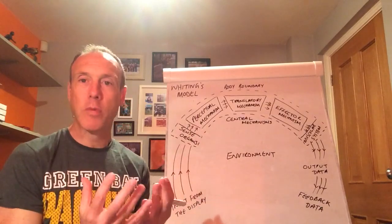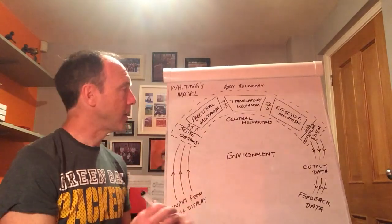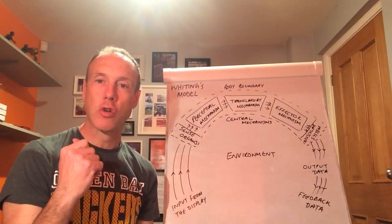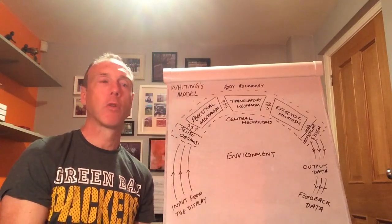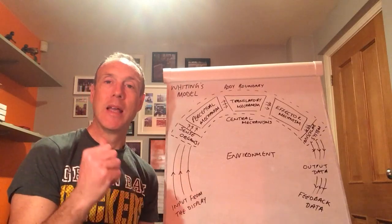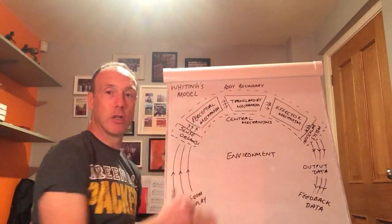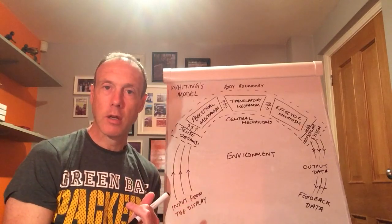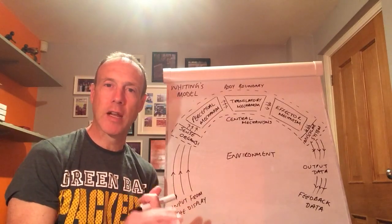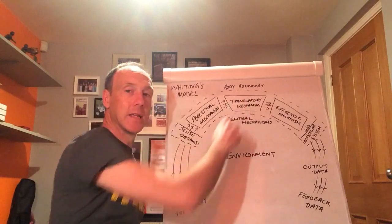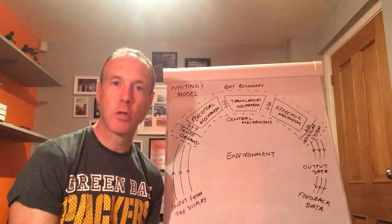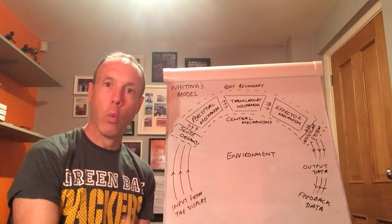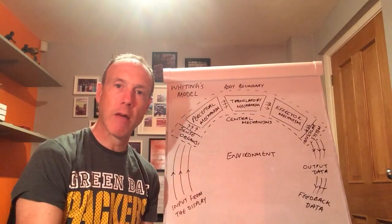As a result of that we're interpreting that information and then that information is being passed on to the central mechanism which is the translatory mechanism. Now the translatory mechanism is designed then to use the information that's been passed on, the detection of that stimulus, the comparison of the stimulus, and then the recognition of the stimulus to make a decision. This is the situation we find ourselves in, this is the information that we have, what are we going to do, what's going to be our response.